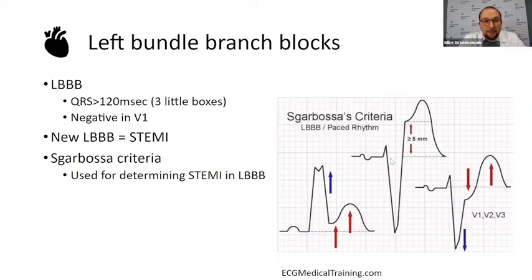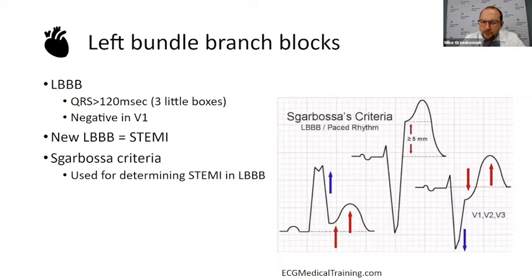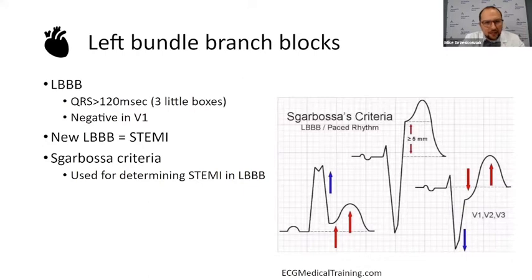Depending on what lead it is, it could be a left or a right bundle. There's a lot of criteria, especially from a cardiology standpoint, to determine whether something's a left or a right bundle. For your intents and purposes, all you have to look at is V1. Ninety percent of the time, if you have a wide QRS complex and V1 is negative, it's a left bundle branch block. If V1 is positive, it's a right bundle branch block. Wide QRS — is it positive or negative in V1?